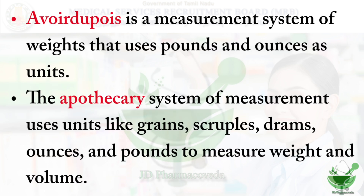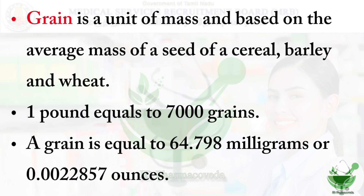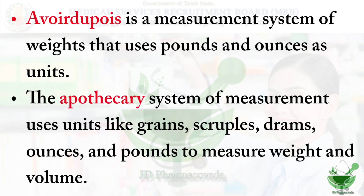One ounce is 437.5 grains. There are two types of systems: the avoirdupois system and the apothecary system. The grain is a very small unit — for example, cereal, barley, and wheat. One pound equals 7000 grains, and one grain equals 64.798 milligrams. In the avoirdupois system, pounds and ounces are used. Troy is used for precious metals like gold and silver.